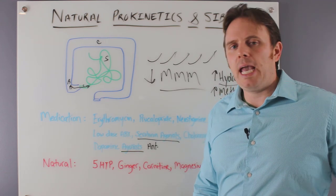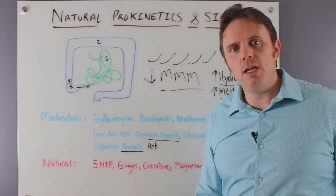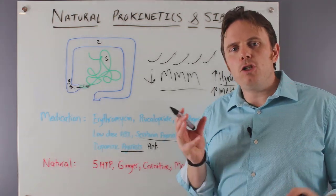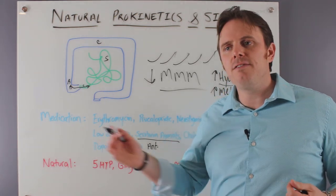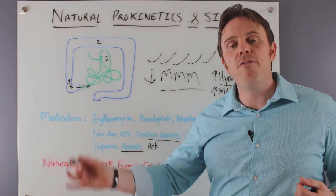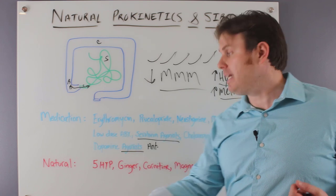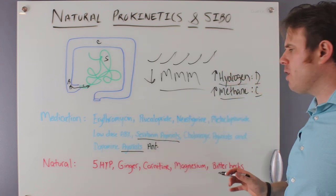Bitters. That could be chamomile. That could be gentian. That could be lemon balm. That could be orange peel. Any of these Swedish type of bitter herbs taken 5, 10, 15 minutes before a meal can be very helpful. There's a good formula called Iberogast that has some of these in it. These are some really powerful compounds.